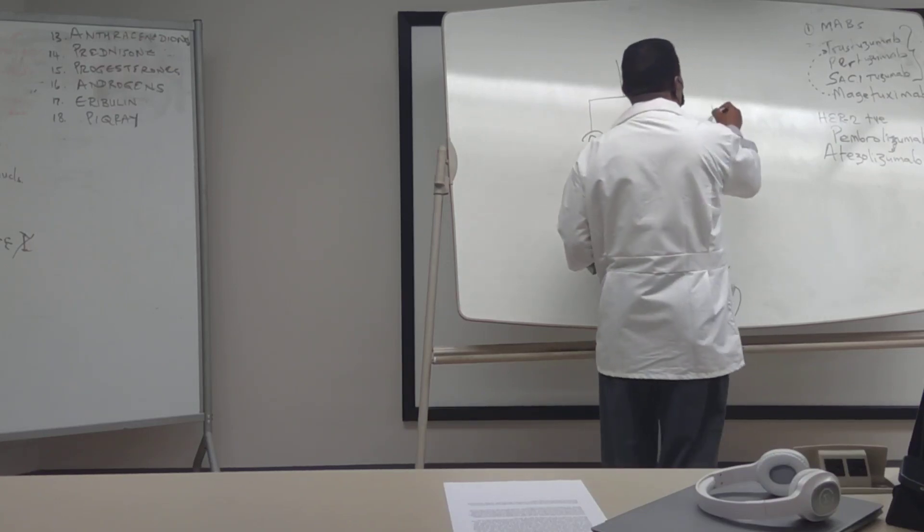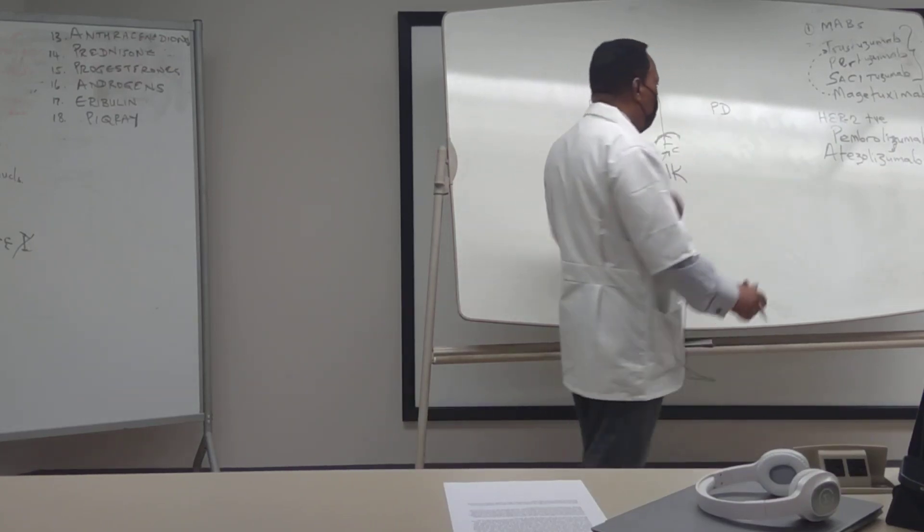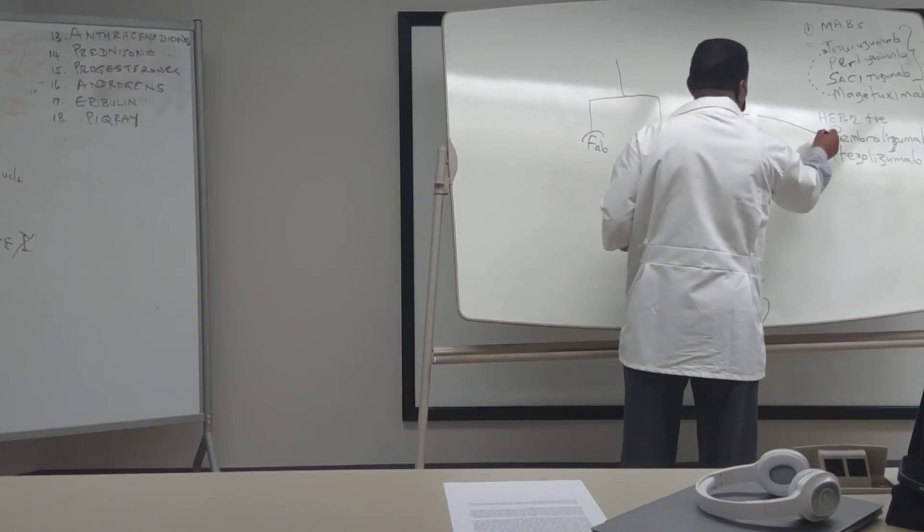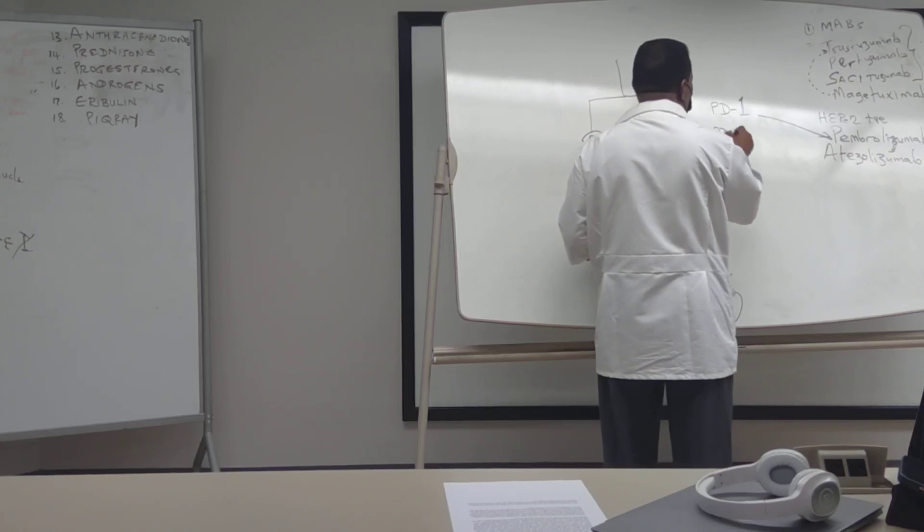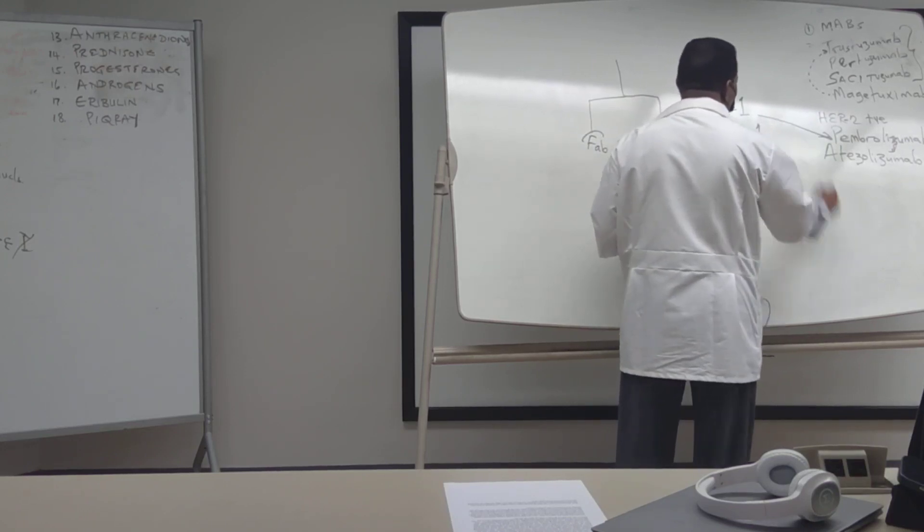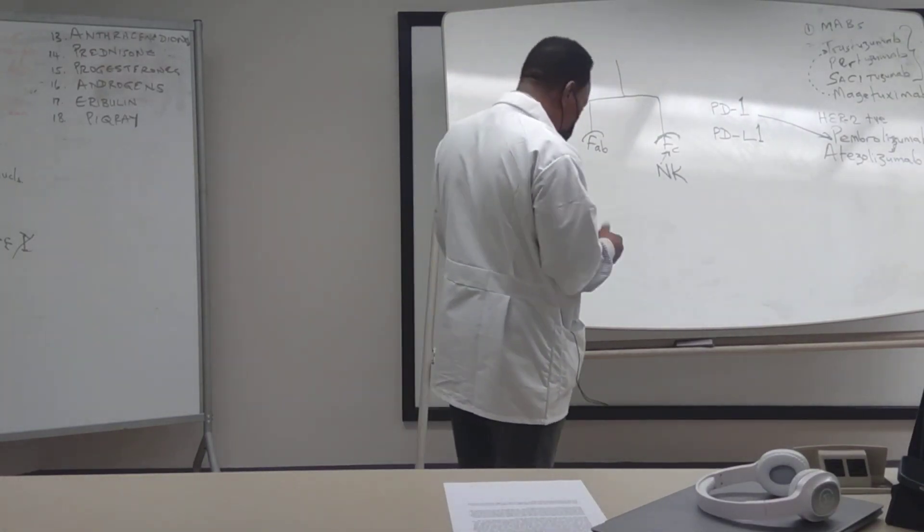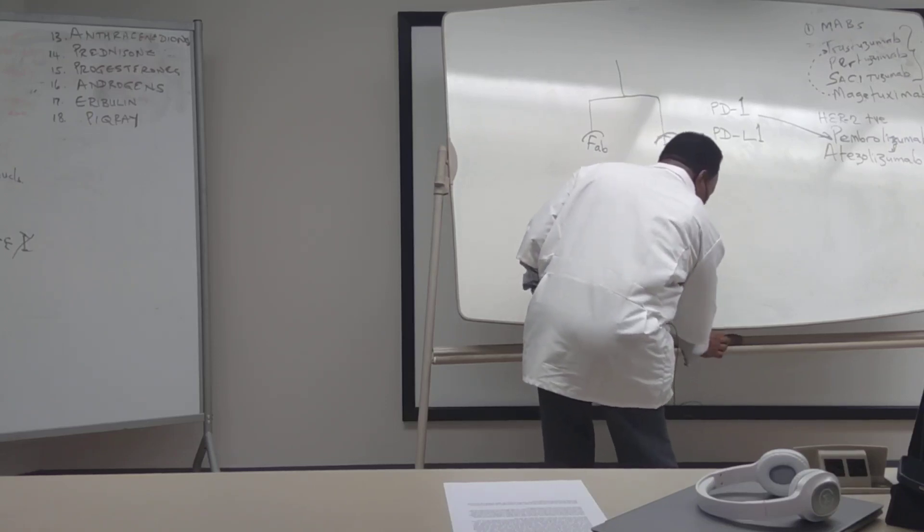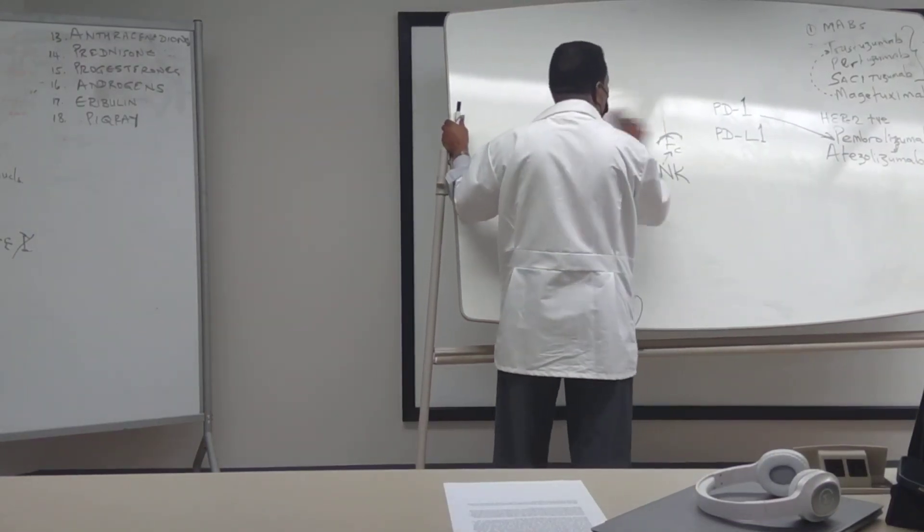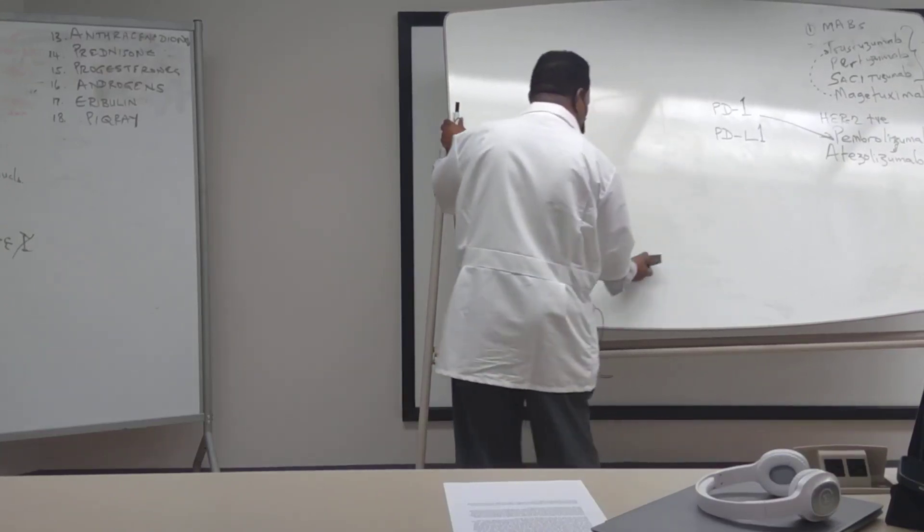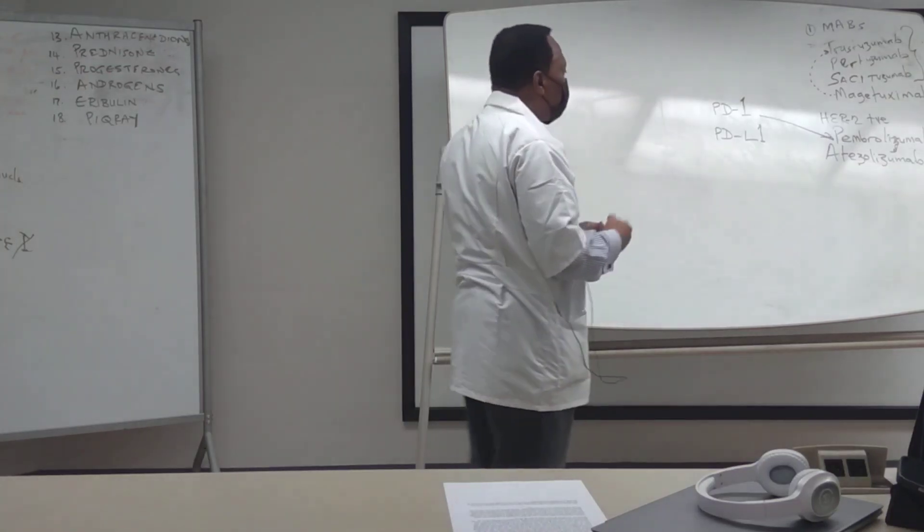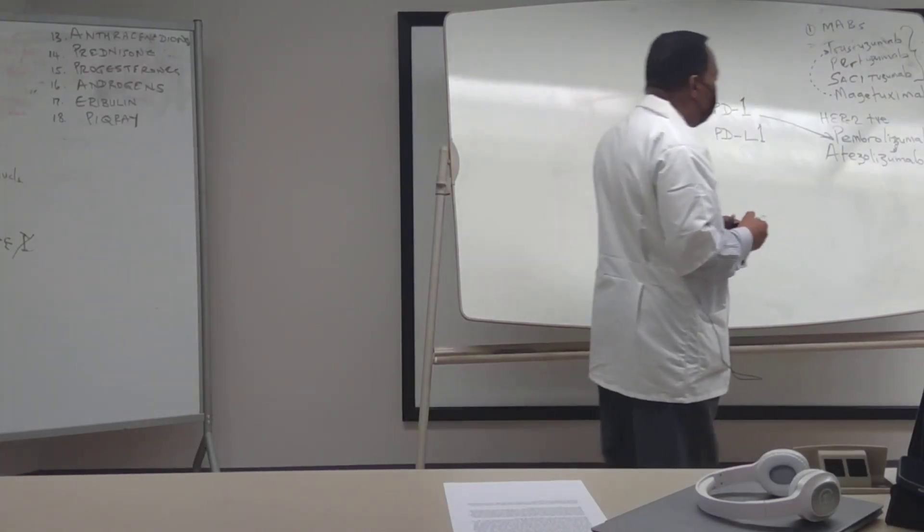This one tends to inhibit programmed death ligand 1. Atezolizumab tends to inhibit programmed death ligand 1, that is the receptor itself. And of course you know that pembrolizumab can be used for other cancers like lung cancer, small cell lung cancer, can be used there.